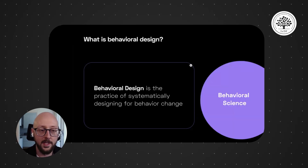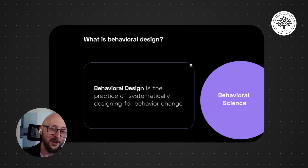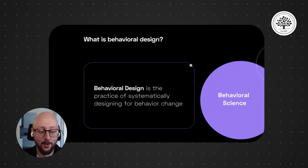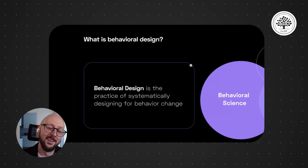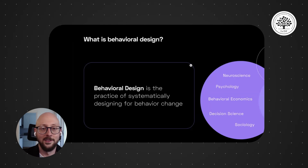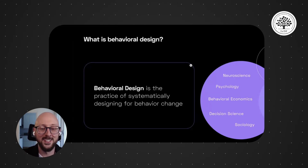Another way to think about behavioral design is to think about what the key components are. It comes from behavioral science and behavioral economics, but there's also quite a bit of data science involved and quite a bit of design. Within behavioral science alone there are lots of components: neuroscience, decision science, psychology, sociology, and so on.